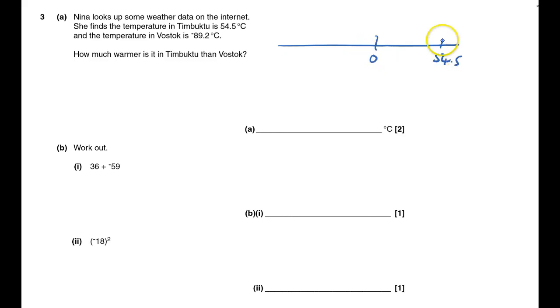That's 54.5, and Vostok is minus 89.2. We've got to look at how much warmer it is in Timbuktu than in Vostok, so you've got to go 89.2 and then 54.5. So 89.2 plus 54.5 is 143.7.